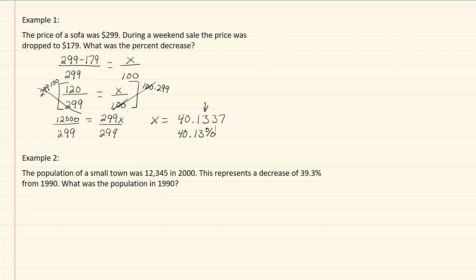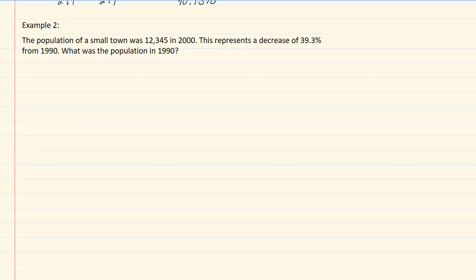Let's take a look at example 2. The population of a small town was 12,345 in 2000. This represents a decrease of 39.3 percent from 1990. What was the population in 1990?